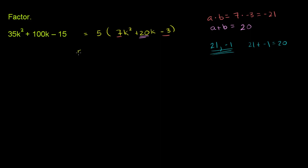We have 5 times 7k squared, and I'm going to break this 20k into a plus 21k minus k. I'm using those two factors to break it up. And then we finally have the minus 3.